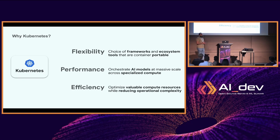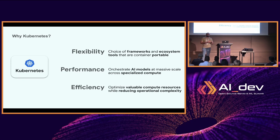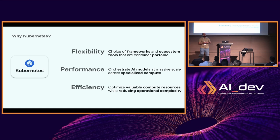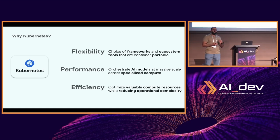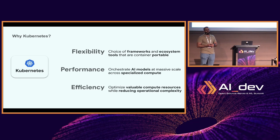Why Kubernetes? Kubernetes is a universal control plane. The most important feature is portability — if I run my model on Kubernetes, it can run on any cloud provider (Google, AWS, Azure) or on-premises. The second benefit is performance: containerization has changed how we deploy applications and LLM models. Third is efficiency: auto-scaling features and the ease of adding resources, RAM, CPUs, and nodes to Kubernetes clusters is a game changer.